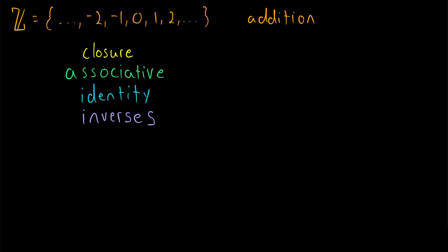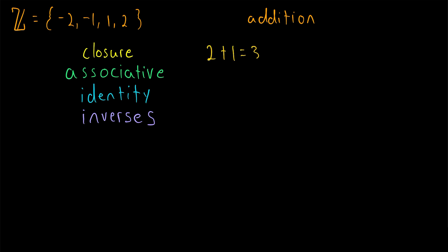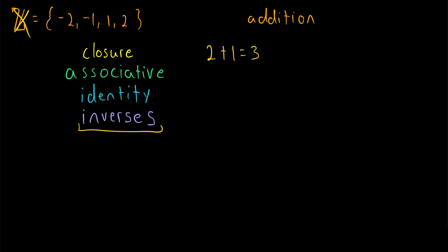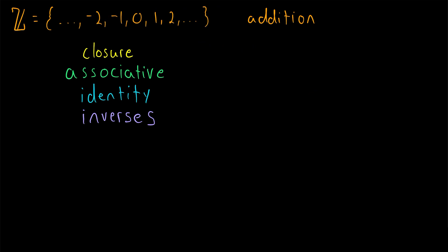What if instead of changing the operation we changed the set? Suppose we just consider the set containing negative two, negative one, one, and two. Clearly this poses several problems. For example, two plus one equals three, which is not in our set. We also don't have an identity element — zero is not an element of the set, so we've got no identity. And if we've got no identity, we don't have a definition of inverse, because the inverse of an element is what we combine it with to produce the identity.